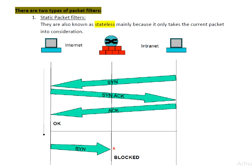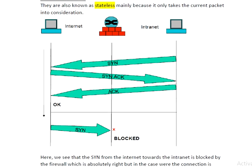And when the Internet machine is sending the SYN, it will block. But the point is here, once the connection is established, it will not be able to distinguish who has initiated that connection. We see that the SYN from the Internet towards the intranet is blocked by the firewall, which is absolutely right. But in this case, once the connection is established, we cannot distinguish who has initiated. Because this is stateless communication.